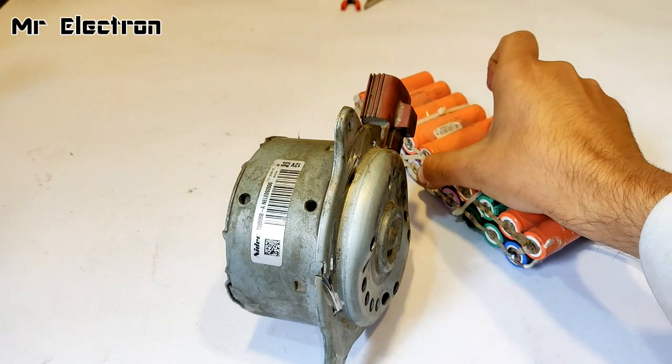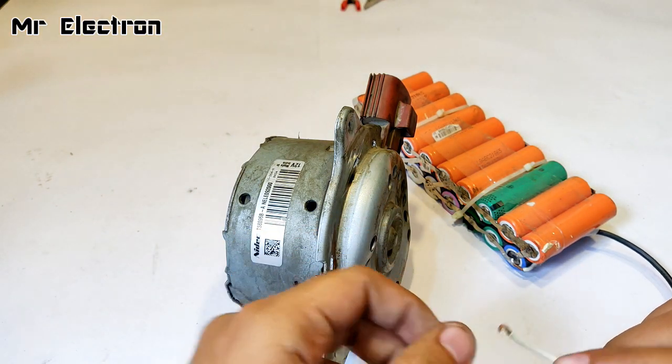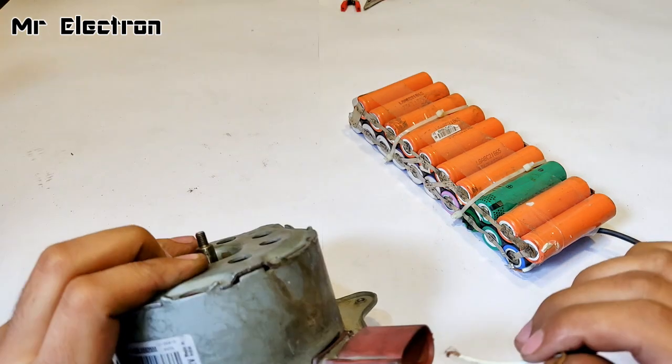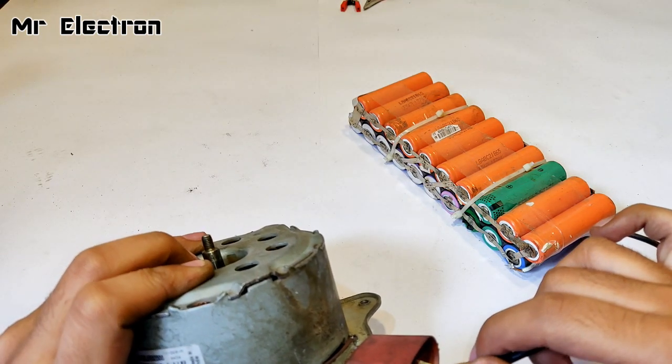For testing it, I am going to use this battery, 3.7 volts. These two terminals, same as before. Let's see. Even if there is spark, it will indicate that it is working.